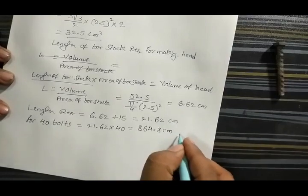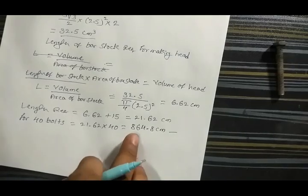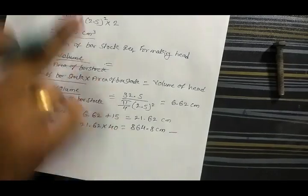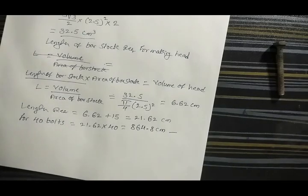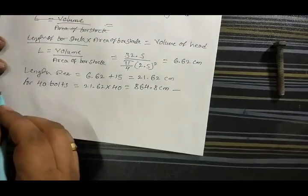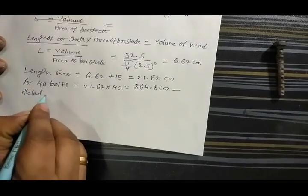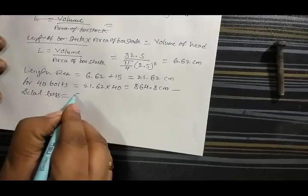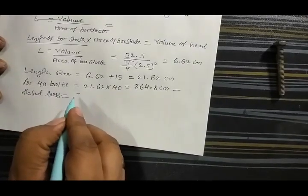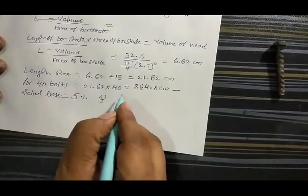This length of bar stock has a diameter of 2.5 cm. Now, let us assume a 5% scale loss and shear loss for the bar stock.